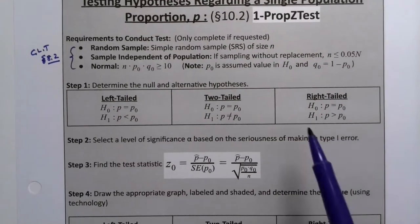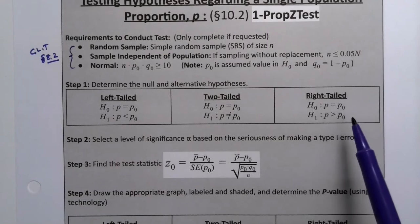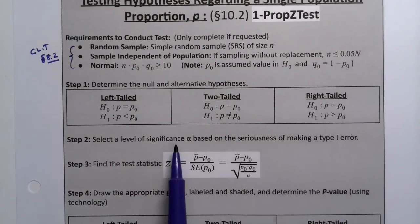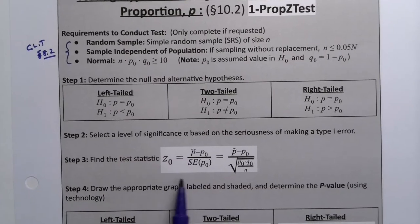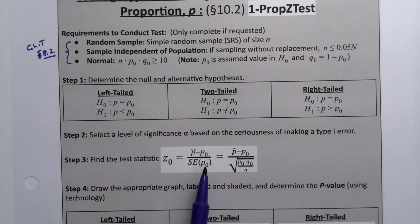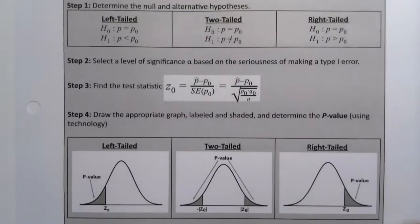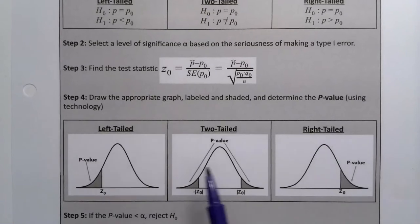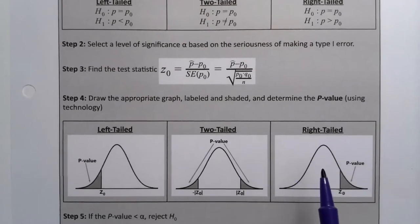All right. So then we have our hypotheses, which we learned how to construct in section 10.1. We have our level of significance, alpha, and that'll just be given. You just look for it somewhere in the problem. Then we're going to find our test statistic, which is basically saying, hey, what's your z-score, right? Take your value minus the assumed value from the null hypothesis and divide it by the standard error, which we learned in section 8.2, is the square root of P times Q over N.